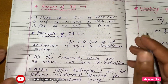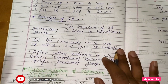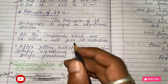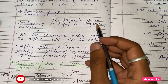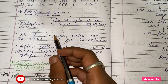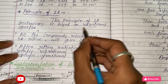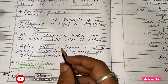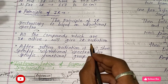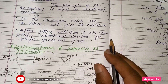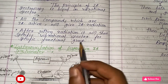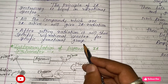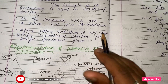Let's see the principle of IR spectroscopy. The principle is based upon vibrational spectra — all compounds which are IR active will interact with IR radiation and show specific vibrational spectra for a specific functional group. This is the principle of IR spectroscopy.